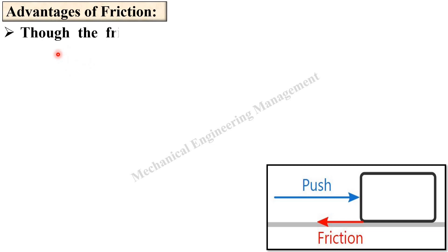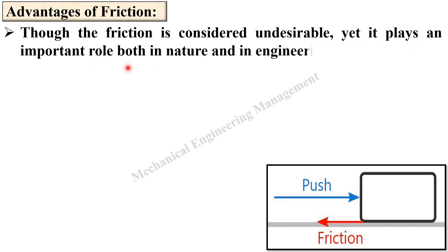Advantages of friction. Though the friction is considered undesirable yet it plays an important role both in nature and in engineering. In the previous session we have discussed about the disadvantages of the friction where we have discussed that due to the friction always energy is wasted. But here it is written though the friction is considered undesirable yet it plays an important role both in nature and in engineering. Let us take examples.